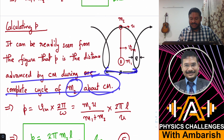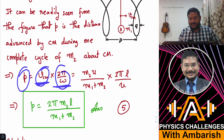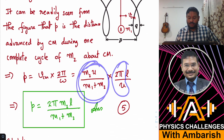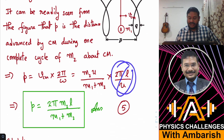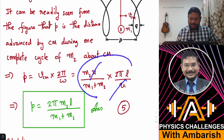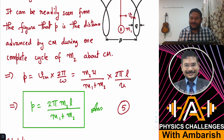So p is the distance advanced by the center of mass during one complete cycle, which is vcm multiplied by the time period 2π/ω. vcm is m2·u/(m1 + m2) and ω is u/l, so substituting gives the time period as 2π·l/u. The u's cancel, giving a fairly simple expression for p: p = 2π·m2·l/(m1 + m2).